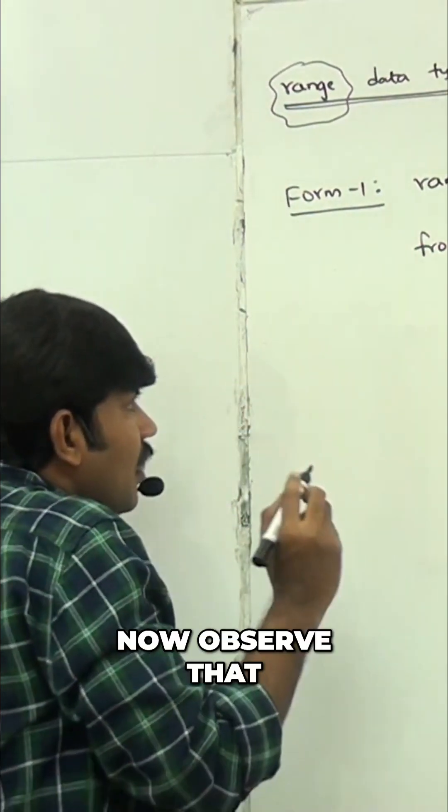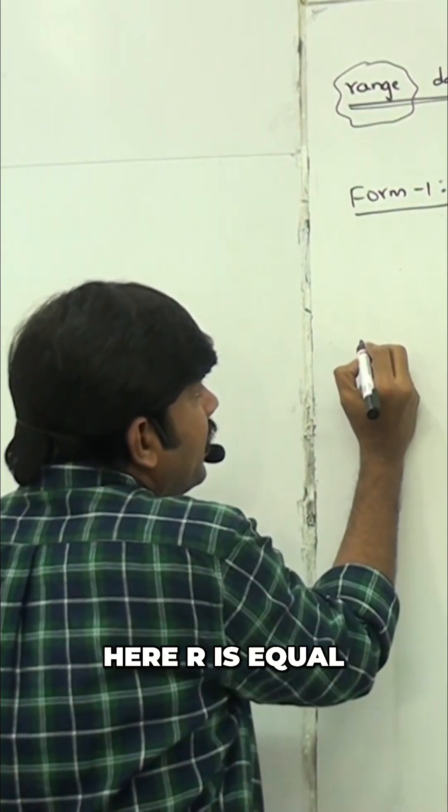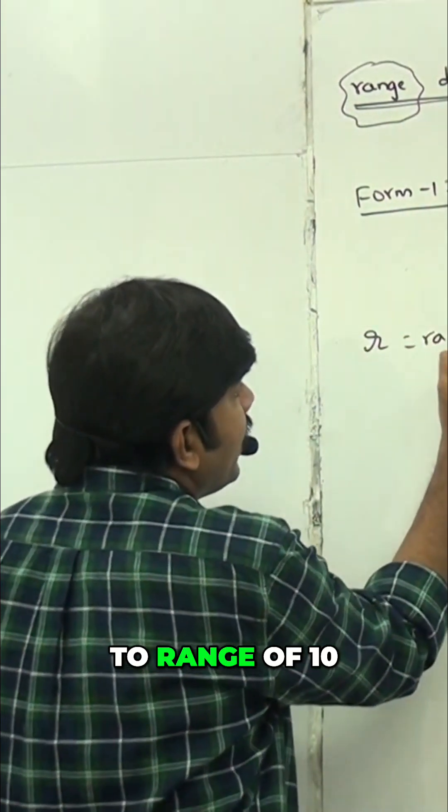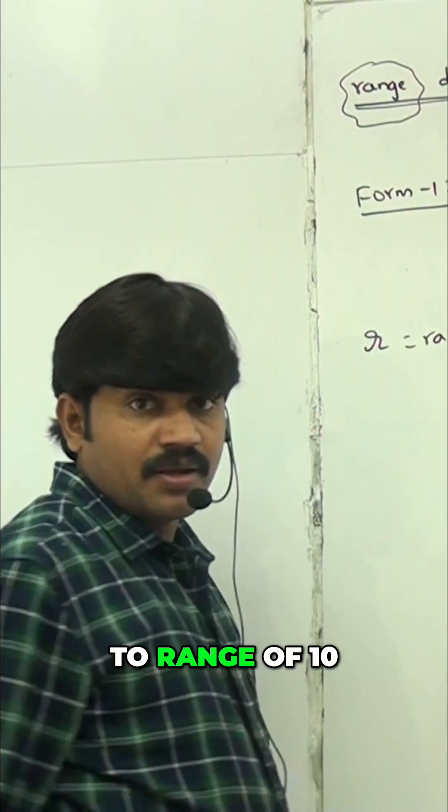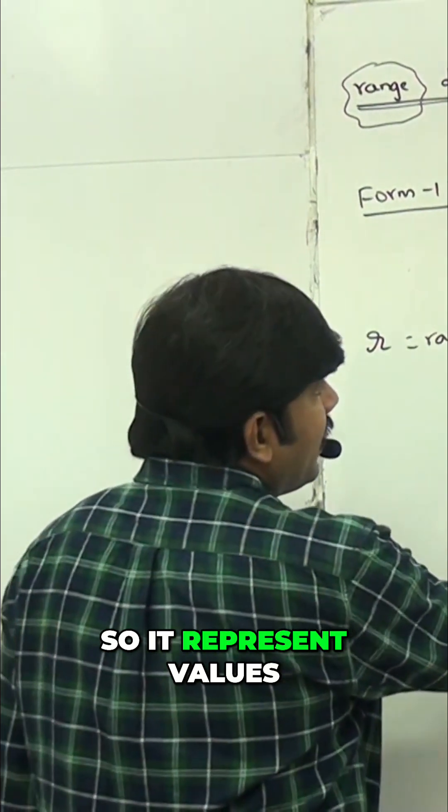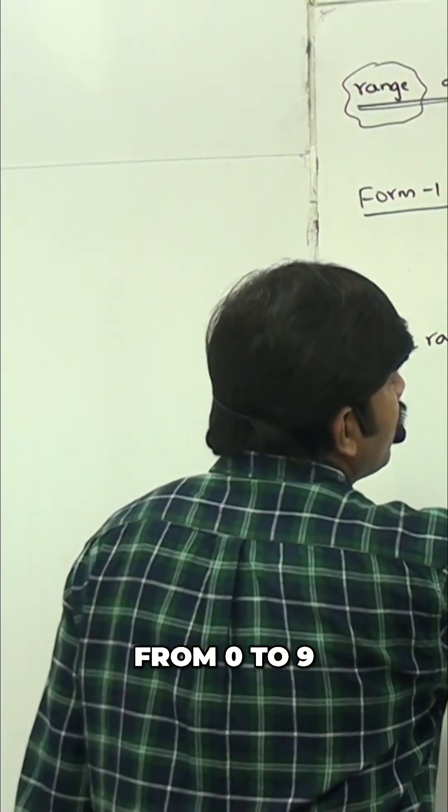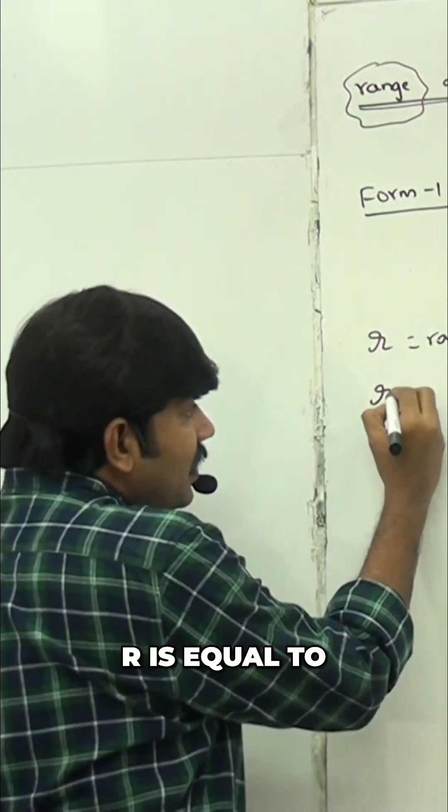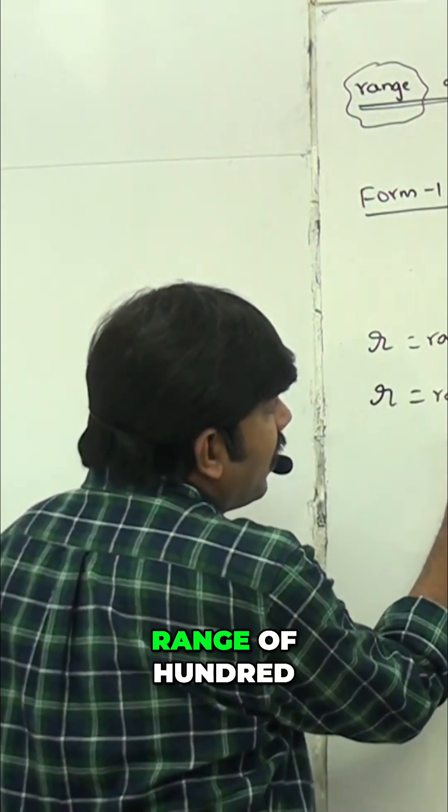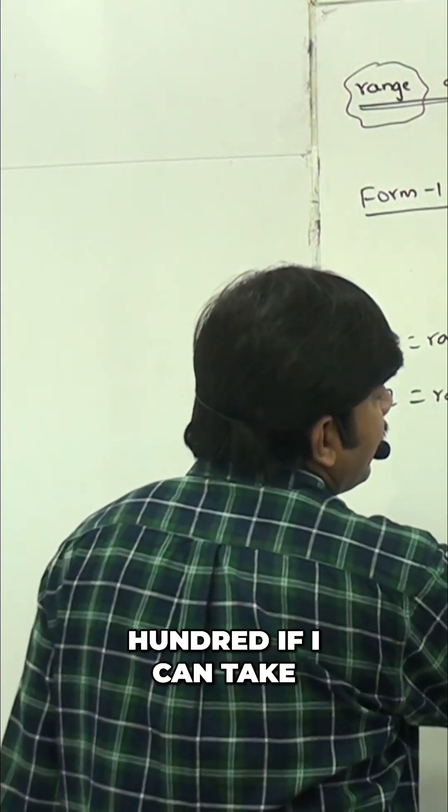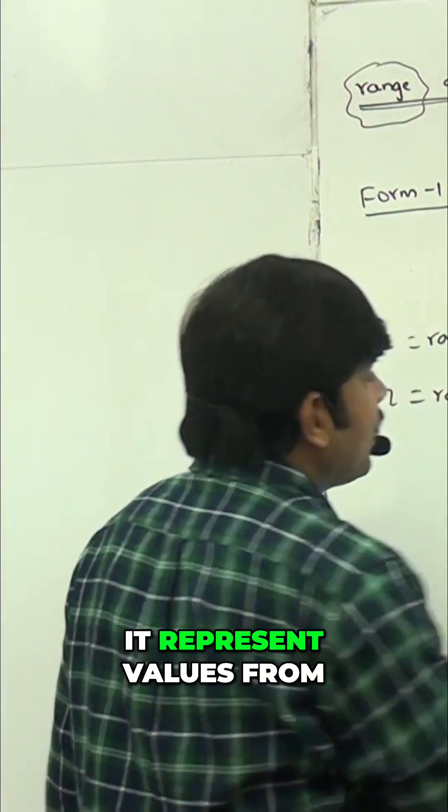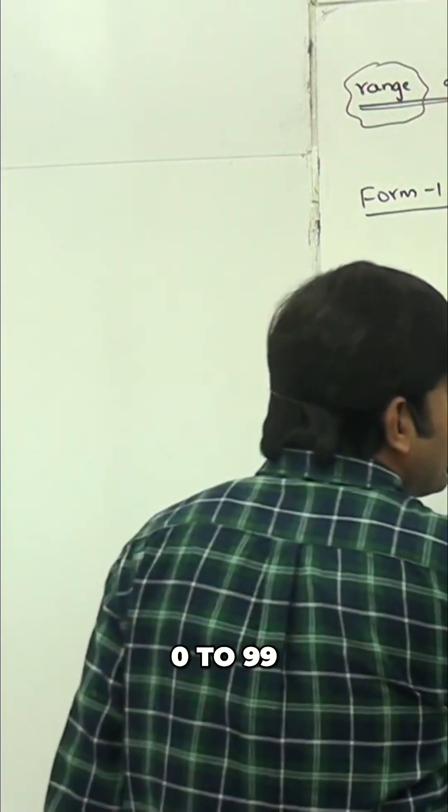Now observe: here, r equals range of 10, so it represents values from 0 to 9. If r equals range of 100, it represents values from 0 to 99.